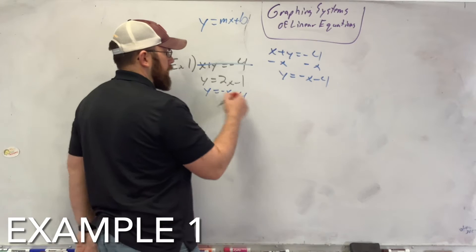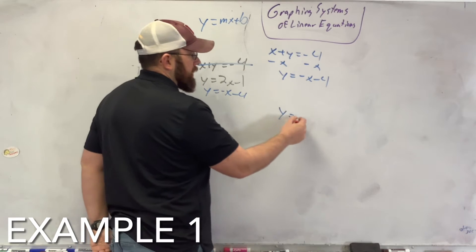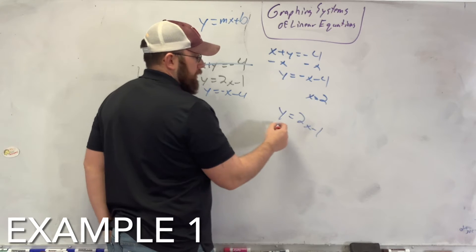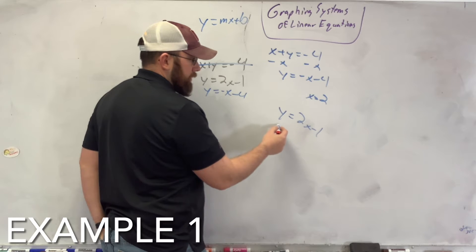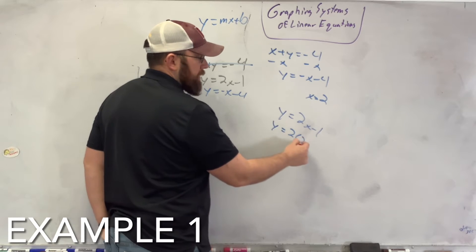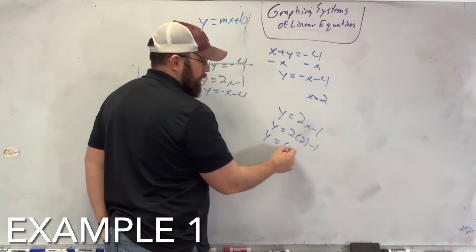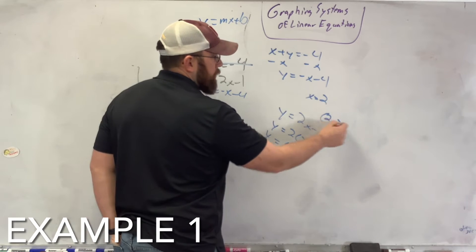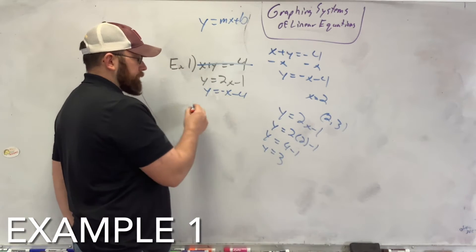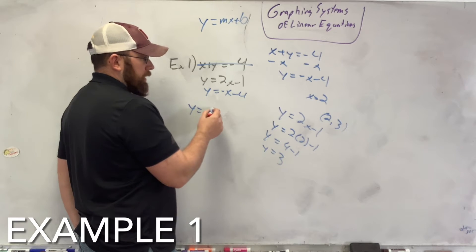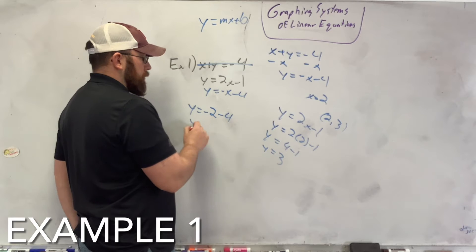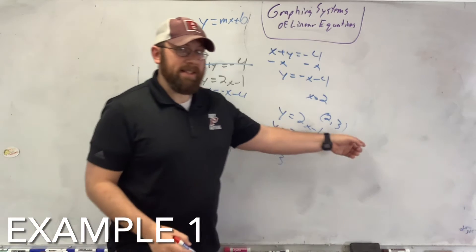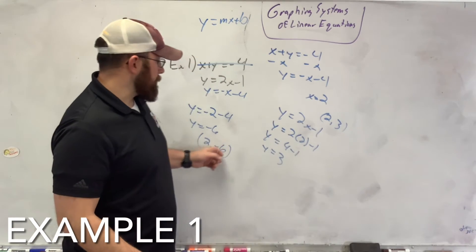If I was just doing one of these — say y equals 2x minus 1 — and x equals 2, I plug in: y equals 2 times 2 minus 1, so y equals 3. My point would be (2, 3). But if I plug it into the other equation, I get y equals negative 2 minus 4, so y equals negative 6, giving me (2, negative 6). Since (2, negative 6) is not the same as (2, 3), this is not my one answer.